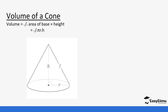The volume of a cone is calculated as one-third times the base area times the height. Since the base is a circle, it becomes one-third times π r² times h. Notice in our diagram we have a slant height. Sometimes you can be given the slant height and the radius and you are required to find the height using the Pythagorean theorem. Let's look at some practice questions.